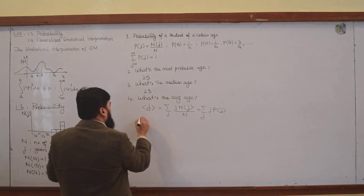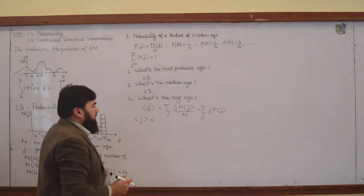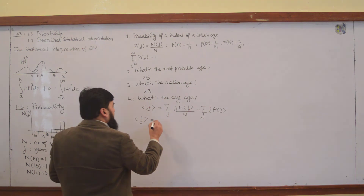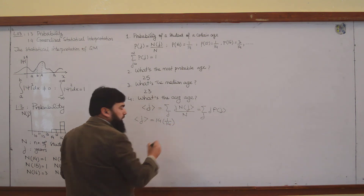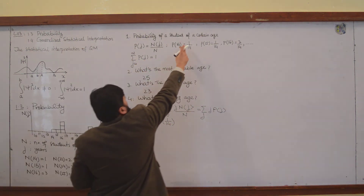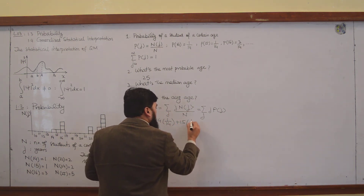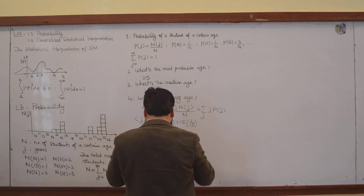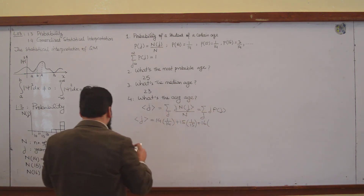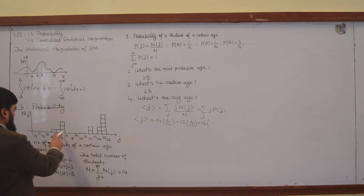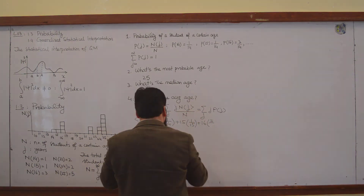Now let me compute this for our example. The first available age is 14, and P(14) = 1/14, so the first term is 14 × (1/14). Similarly, 15 × (1/14), and then 16 × P(16) where P(16) = 3/14, so that term is 16 × (3/14), and so on for the remaining ages.